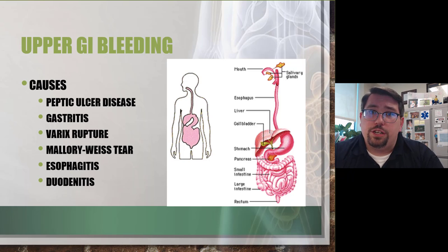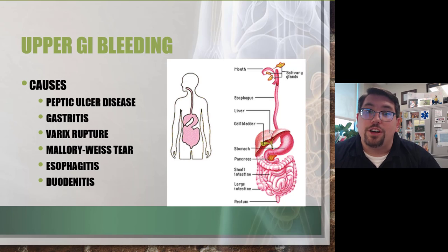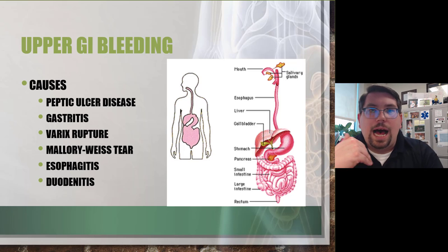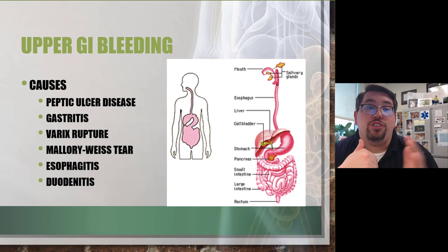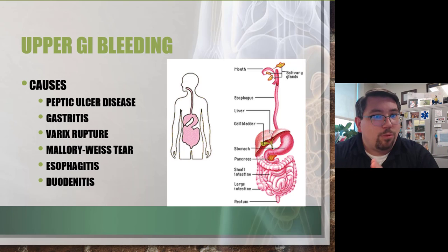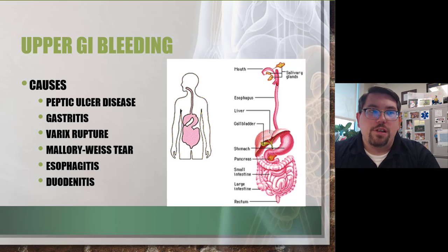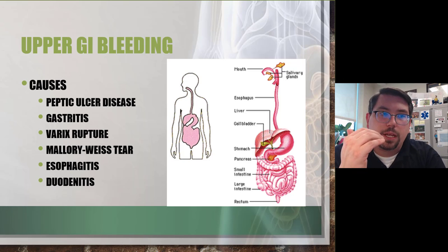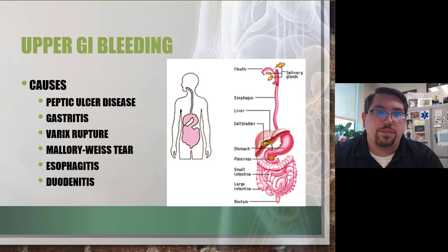Age is another major issue — as we age, the body doesn't handle disease well, especially with underlying comorbidities. There are six major identifiable causes of GI hemorrhage in descending order of frequency. The biggest one is peptic ulcers — stress, cigarette smoke, and alcohol consumption can all lead to ulcers.